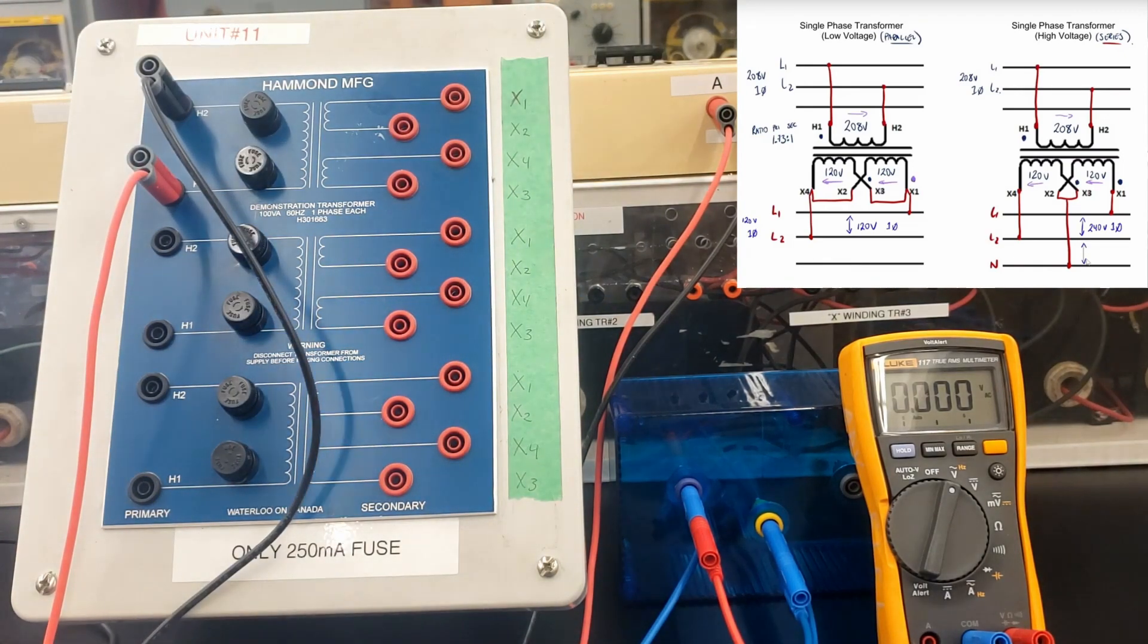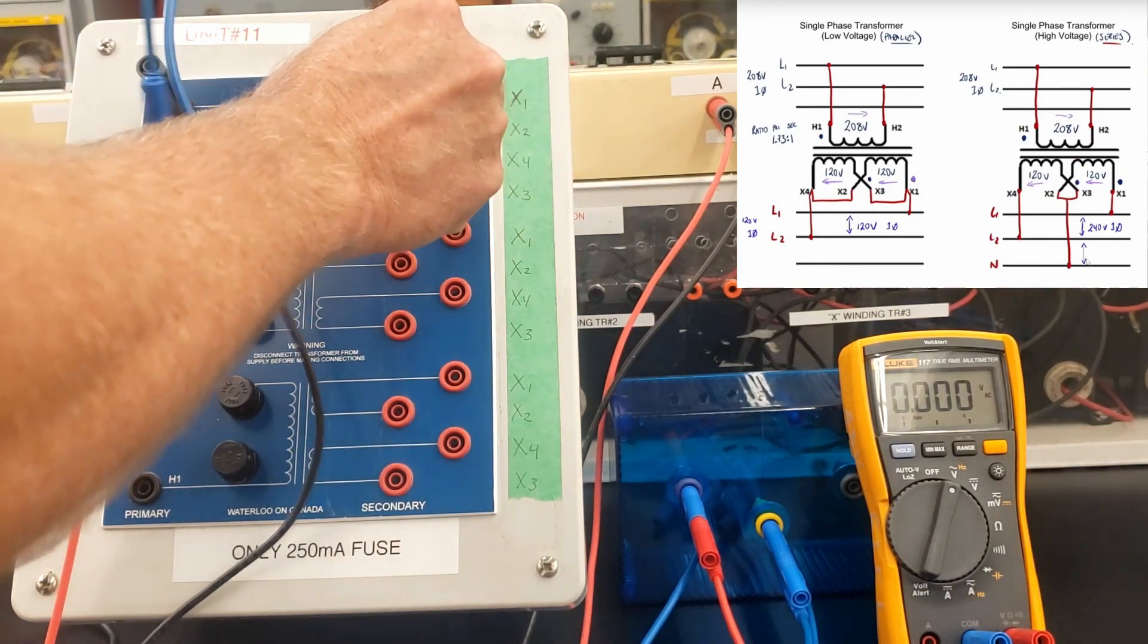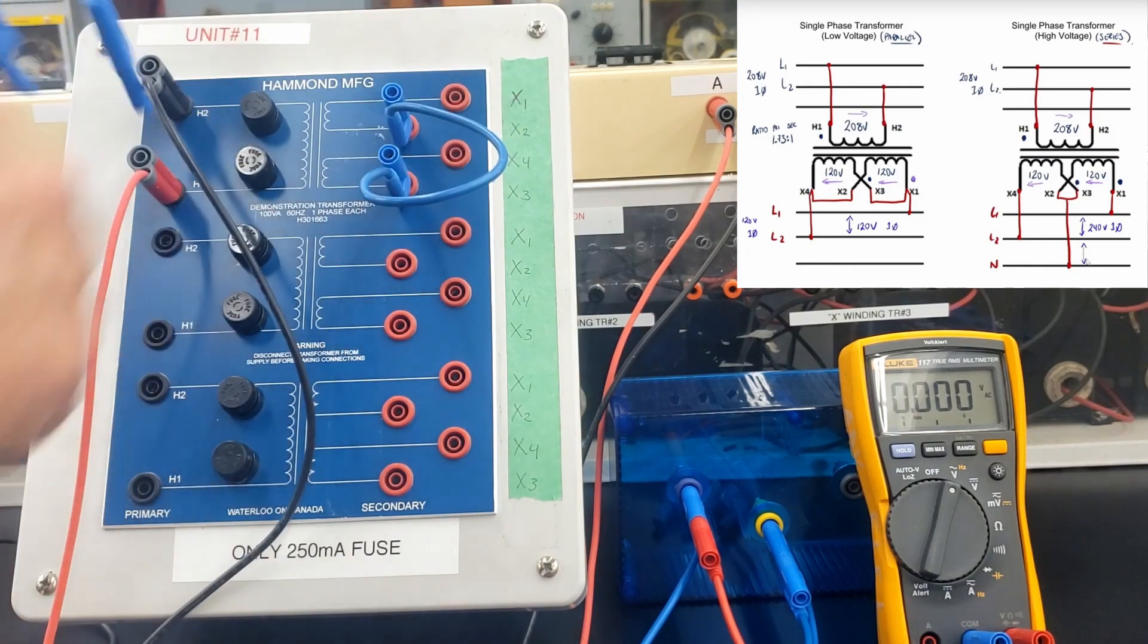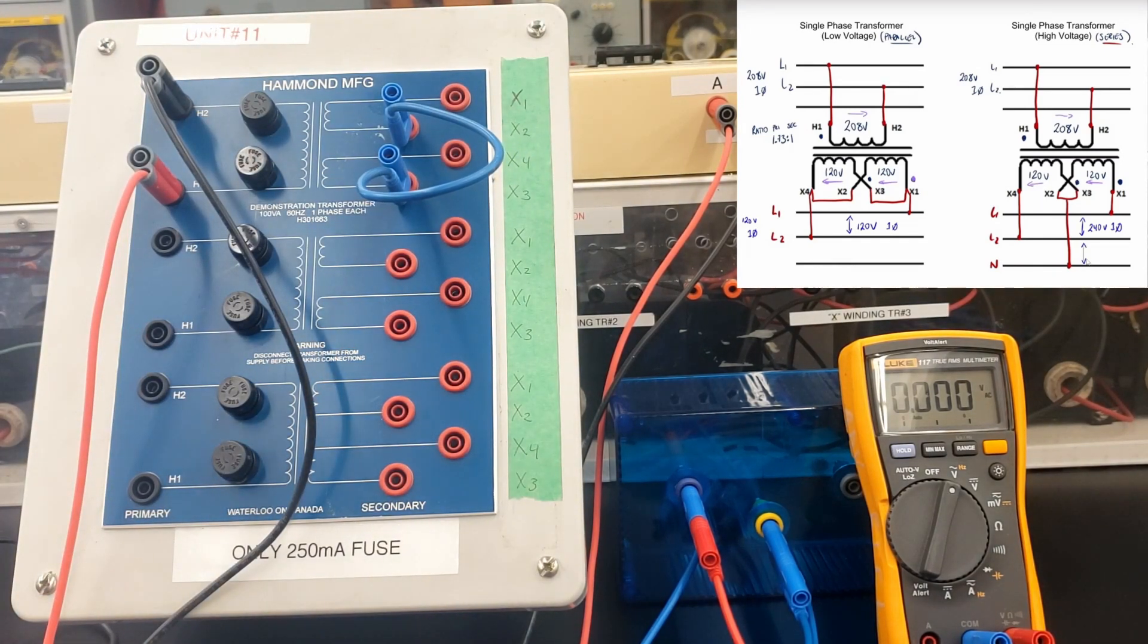Let's de-energize this guy. We're keeping the same primary voltage. H1 and H2 can remain the same. I'm going to take my connections off for these two guys right here. And then, I'm going to series up X2 and X3. We're on page 15 now. We're jumpering X2 and X3.